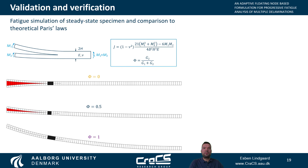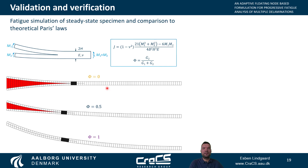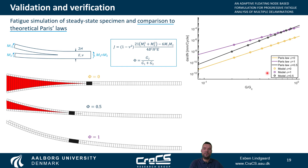Let us now consider some numerical examples. The first examples are validation cases considering fatigue simulation of a moment-loaded DCB specimen. This specimen is attractive because we may achieve any mode mixity between pure mode 1 and mode 2 by adjusting the ratio between applied bending moments, and it is a steady-state specimen, meaning the energy release rate and mode mixity are constant with crack extension. We considered three levels of mode mixity and compare the crack growth rate obtained by simulation to the theoretical Paris law for different levels of loading measured in terms of the energy release rate. The simulated crack growth rates by the adaptive simulation are in perfect agreement with the theoretical Paris law.